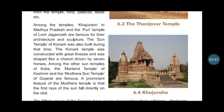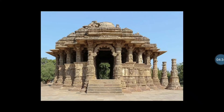The Martand temple of Kashmir is quite famous. A prominent feature of the Modera temple is that the first rays of the sun fall directly on the idol. This is the Sun Temple situated in Modera, Gujarat — students can see the image here.